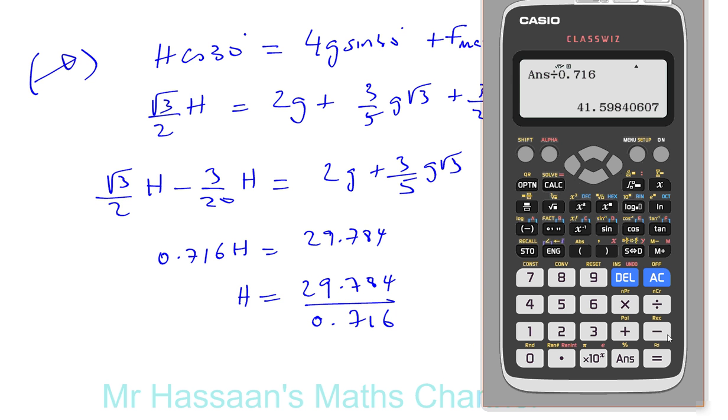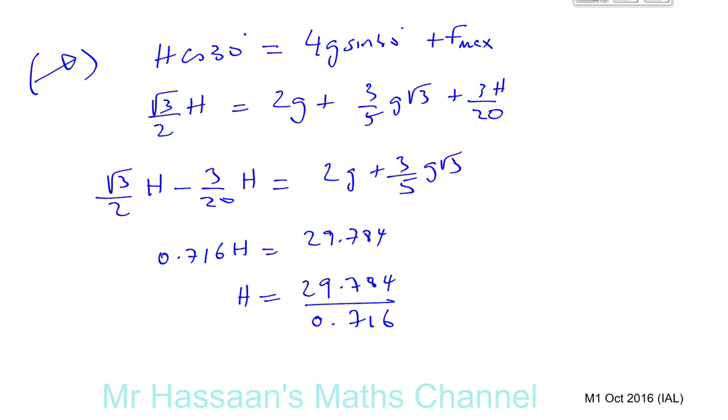So we'll take the answer, divide it by 0.716. And that gives us 41.598. And as we know, we can round this to 3 significant figures, 41.6 Newtons. Or we can write it to 2 SF as we use G in the calculation, which is 9.8, which is 2 SF. So you can write 42, or you can write 41.6. Both of them are perfectly acceptable.